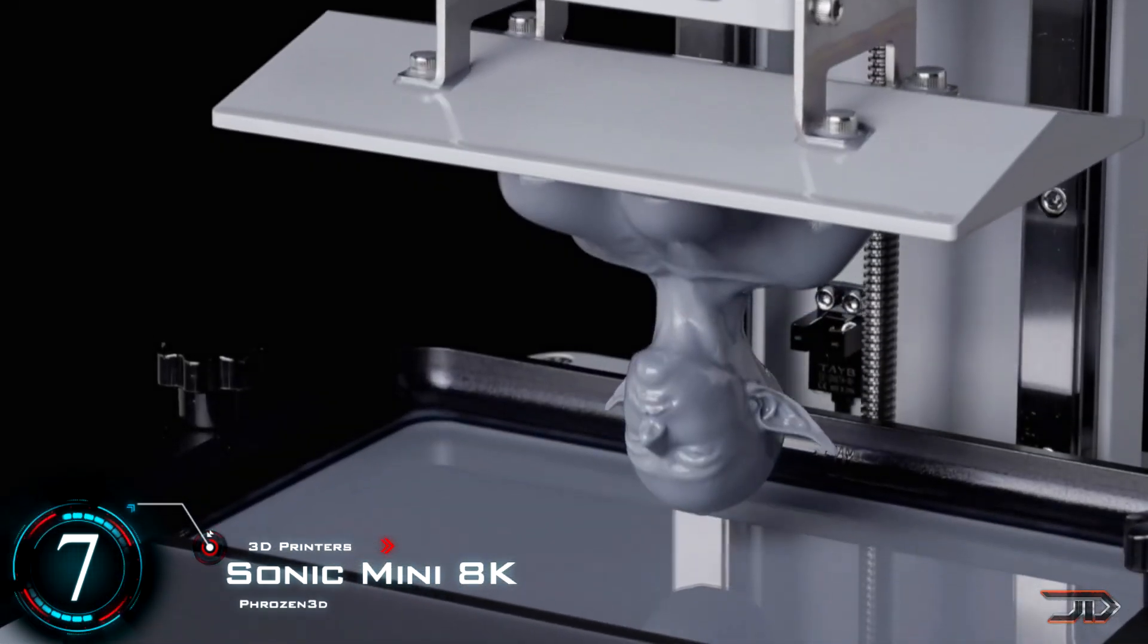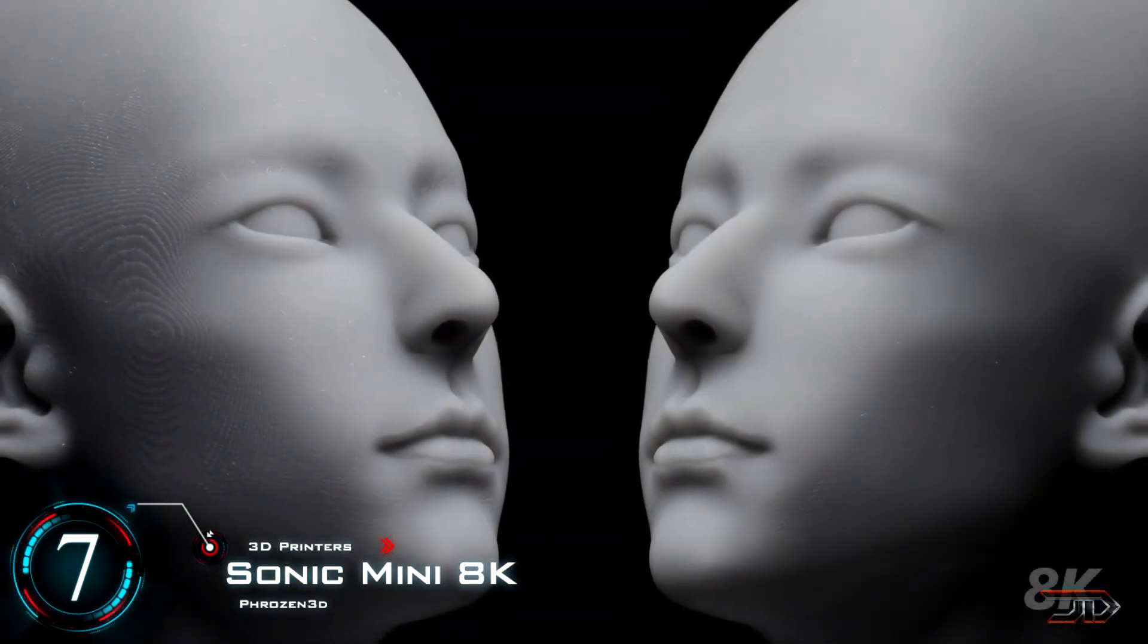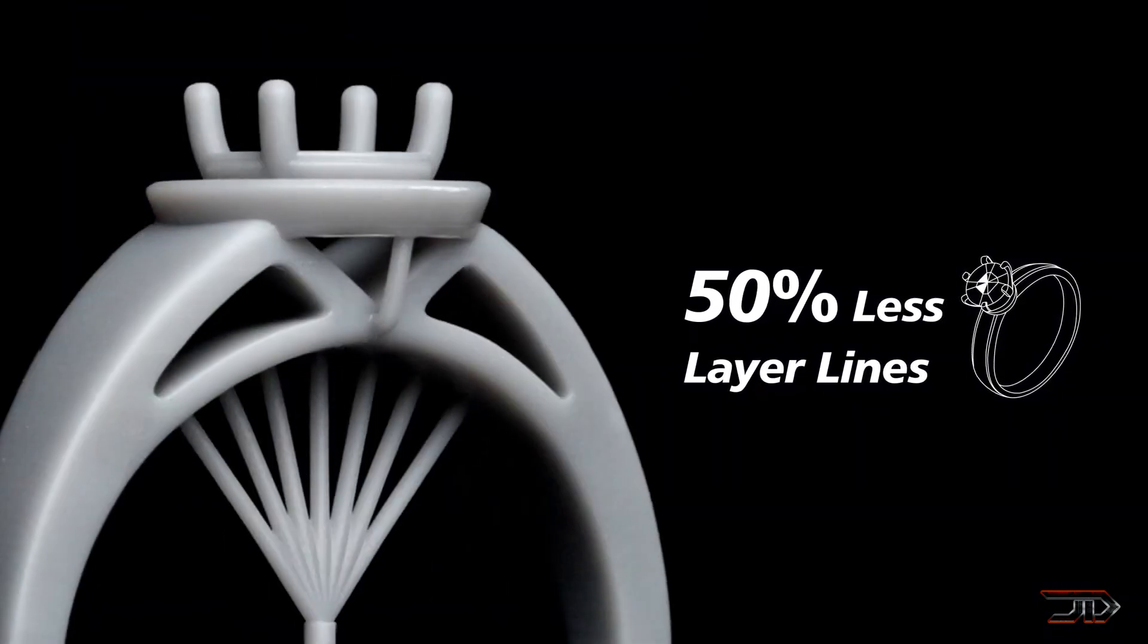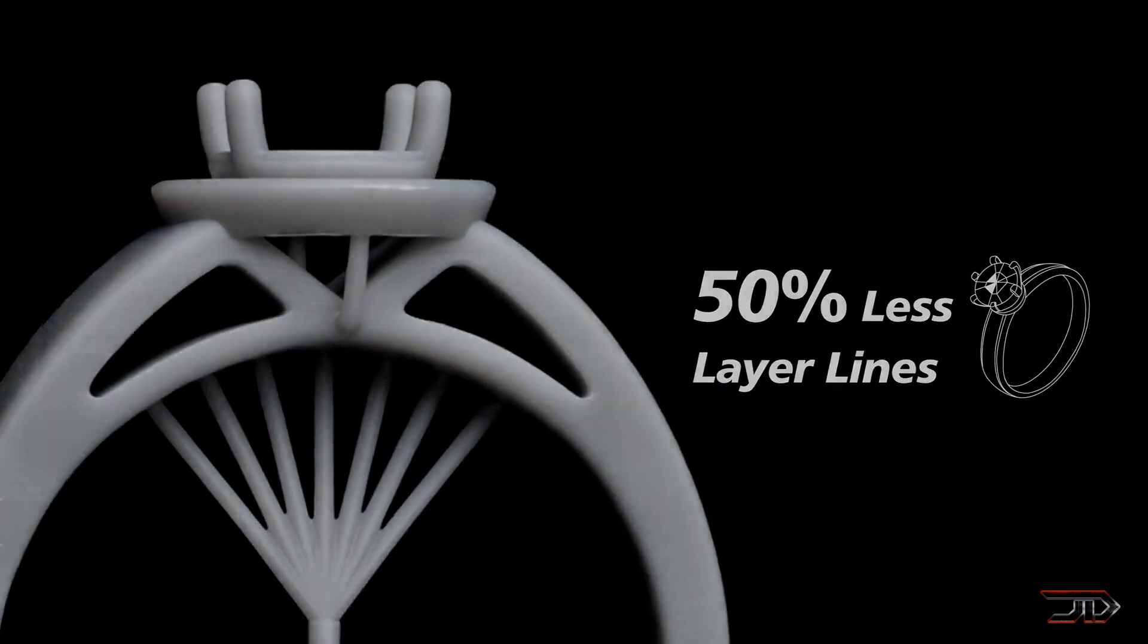Now established in an affordable desktop model, the Mini was one of the first printers to feature a monochrome LED for printing. The 8K has a resolution of 22 microns, which is 30% more than its predecessor.